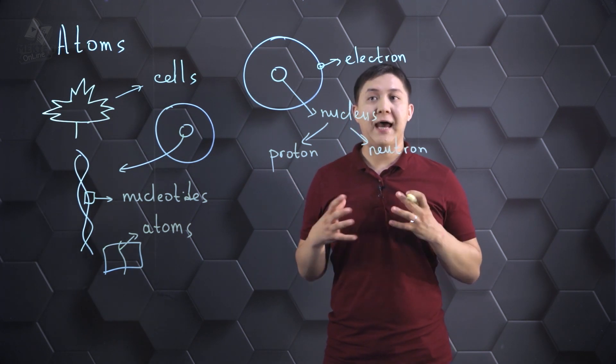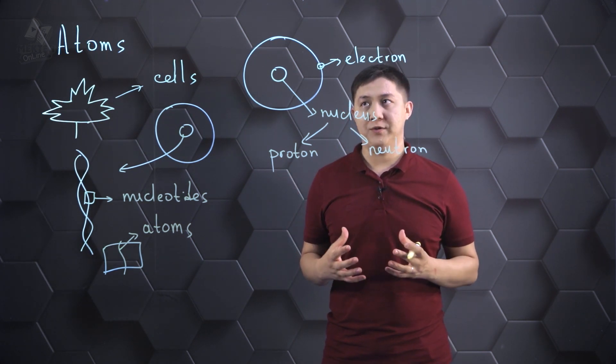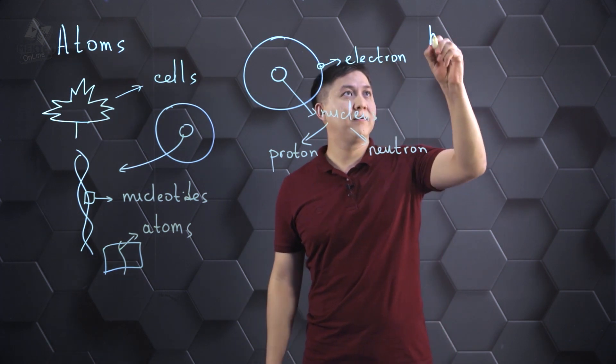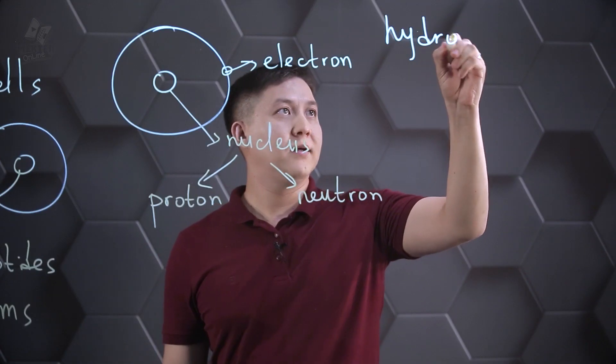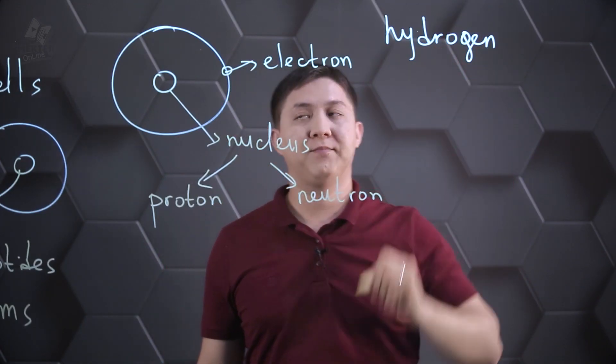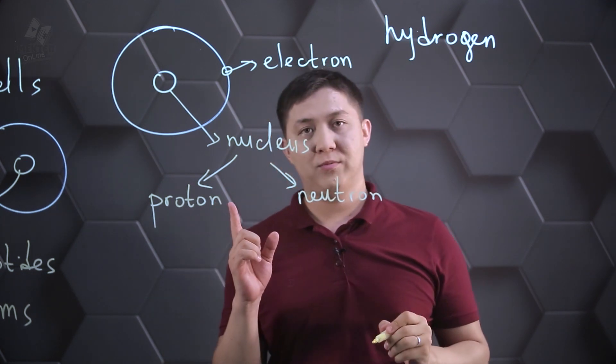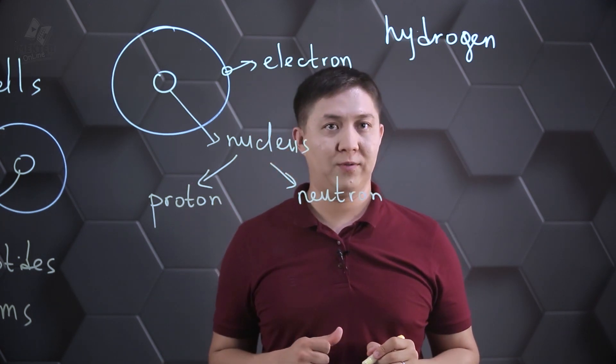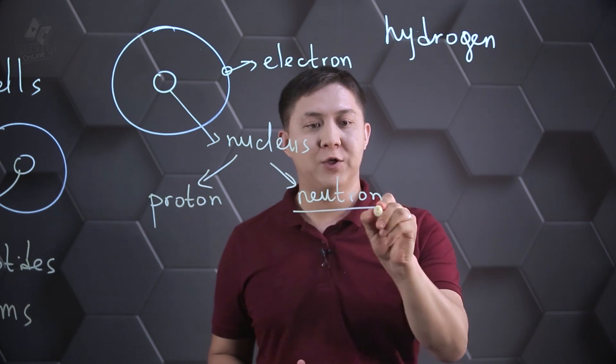Now, we depicted the atom of hydrogen. Hydrogen is a type of atom with one proton and one electron. It does not have neutron.